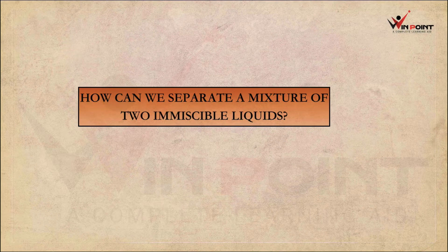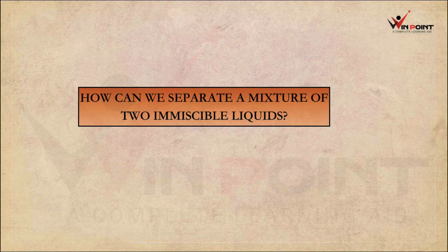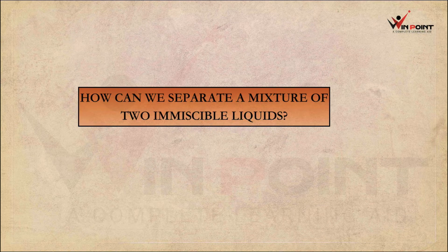In this session we are going to discuss the second method of separation. How can we separate a mixture of two immiscible liquids? Immiscible means the liquids are not going to mix together, like water and oil. Water and oil are not going to mix together because the density of oil is less than water, so it will float on the surface of water.